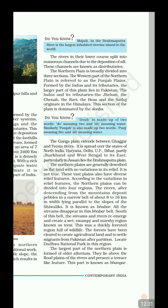The Ganga Plain extends between the Ghaggar and the Tista rivers. The northern plain is generally described as flat, but that is not entirely true — it has diverse relief features. According to the variations in relief, the northern plains can be divided into four regions.